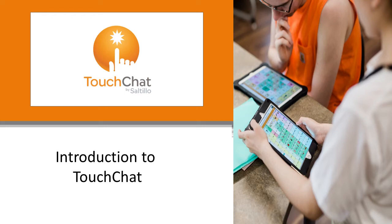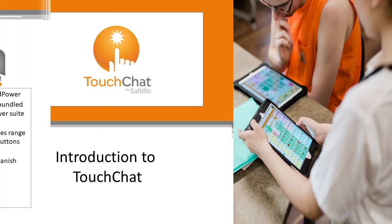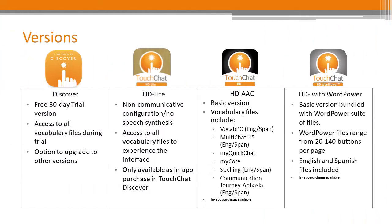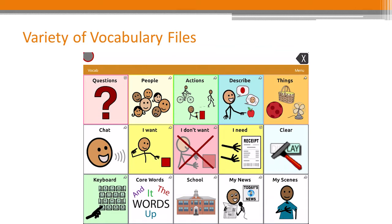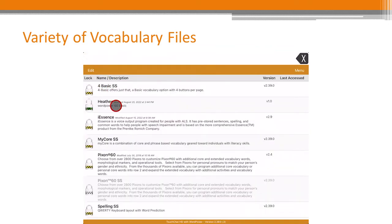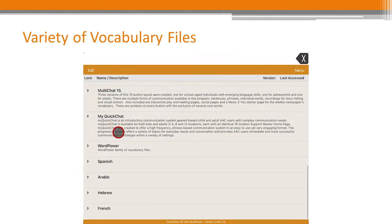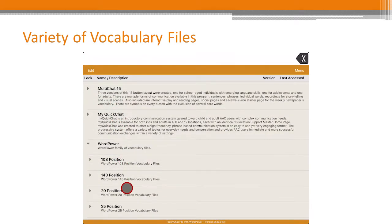TouchChat is a full-featured AAC solution for individuals who have difficulty using their natural voice. TouchChat is available in different versions to meet the needs of your AAC user, and can be found on the Apple App Store on recommended iOS devices. It has a wide variety of vocabulary files to choose from depending upon the motor, vision, and language needs of your AAC user.